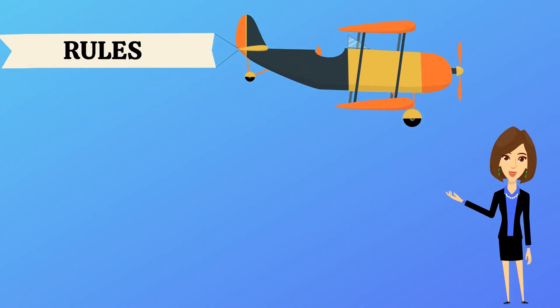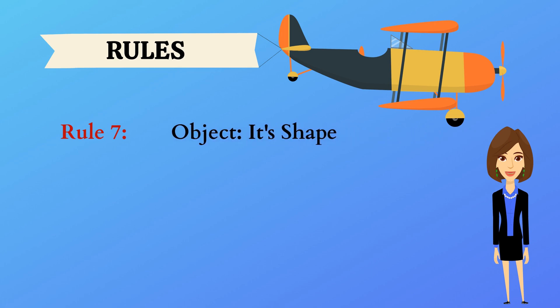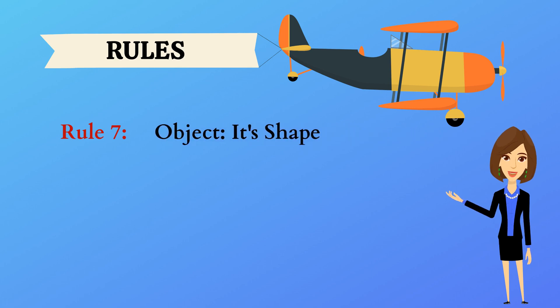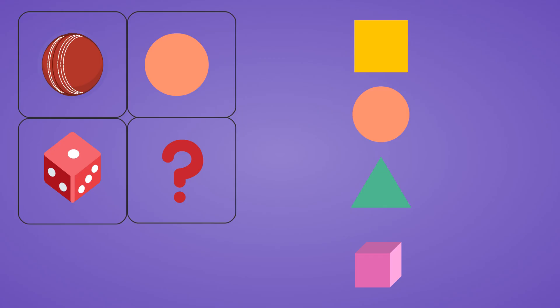Let's look at the rules. Rule 7: Object and its shape. The first picture is a ball. The second picture is a circle. How are they related? The shape of both the pictures looks same. It's a sphere. The rule is object and its shape.